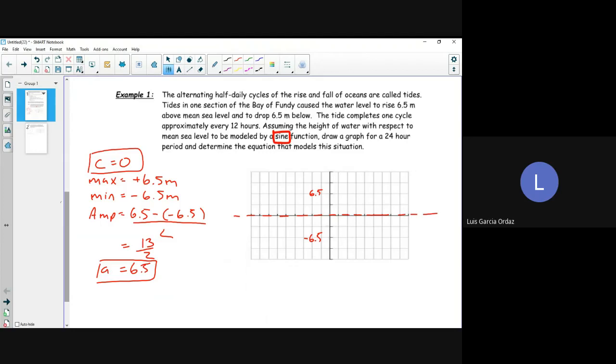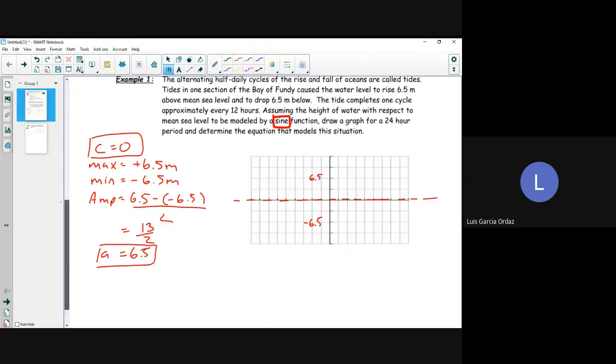So what other information is given to us in this graph? Yeah, you're right. So the period takes what? So one cycle means a period. So our period is 12.